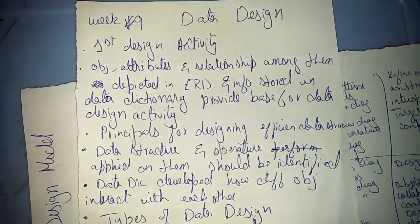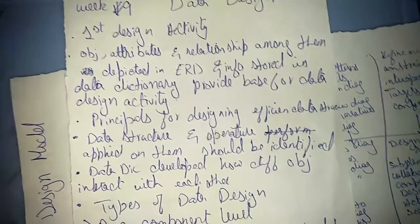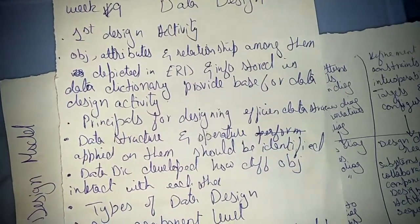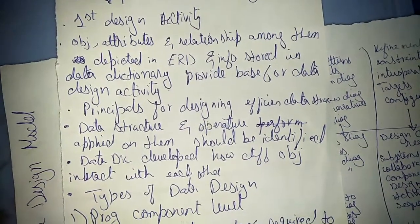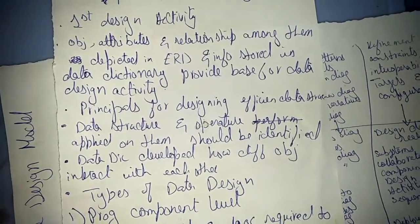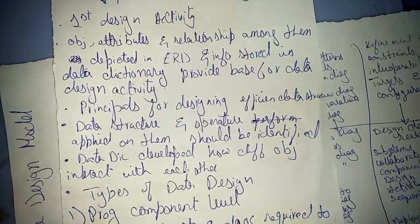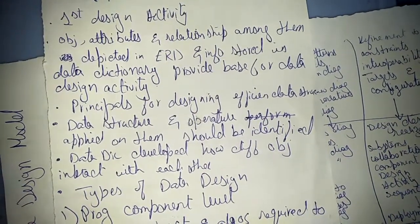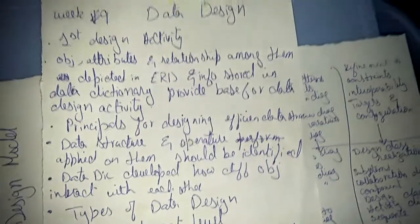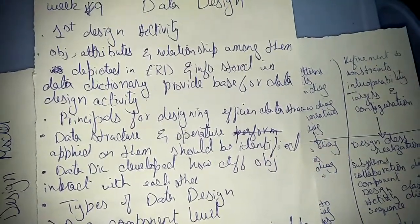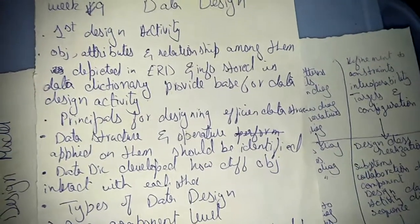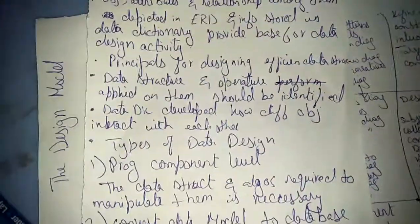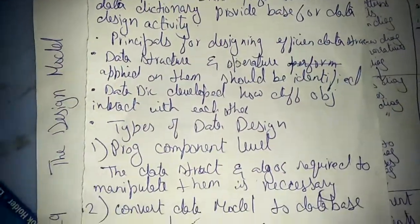In data design, we implement data structures and the operations applied on them, which should be identified. A data dictionary is developed to show how different objects interact with each other. This is the data structure we study in the data dictionary.